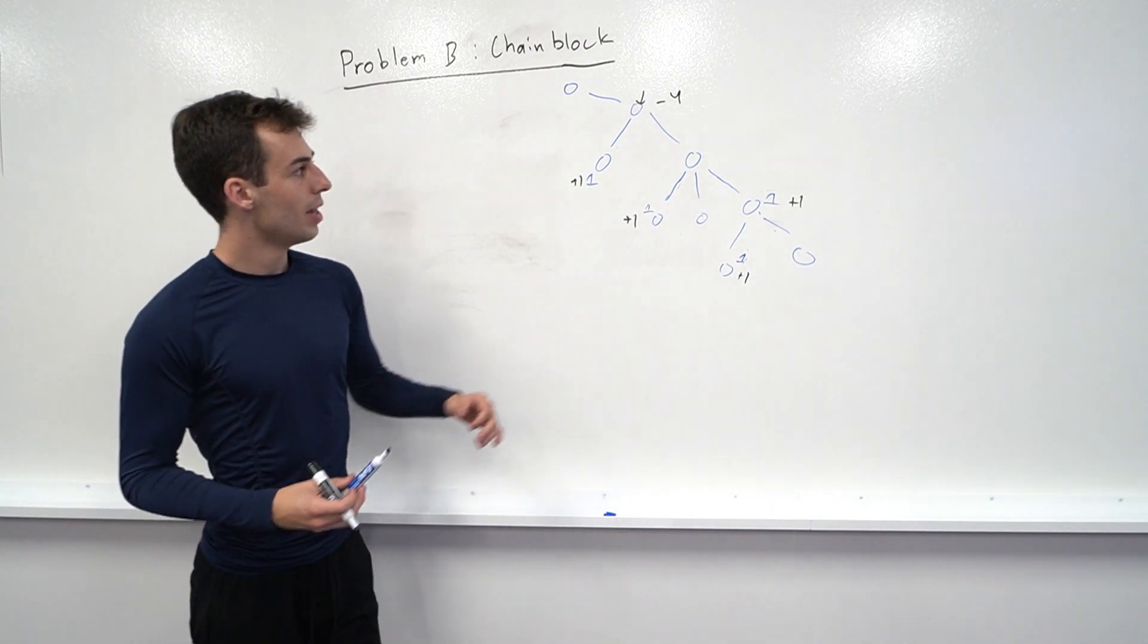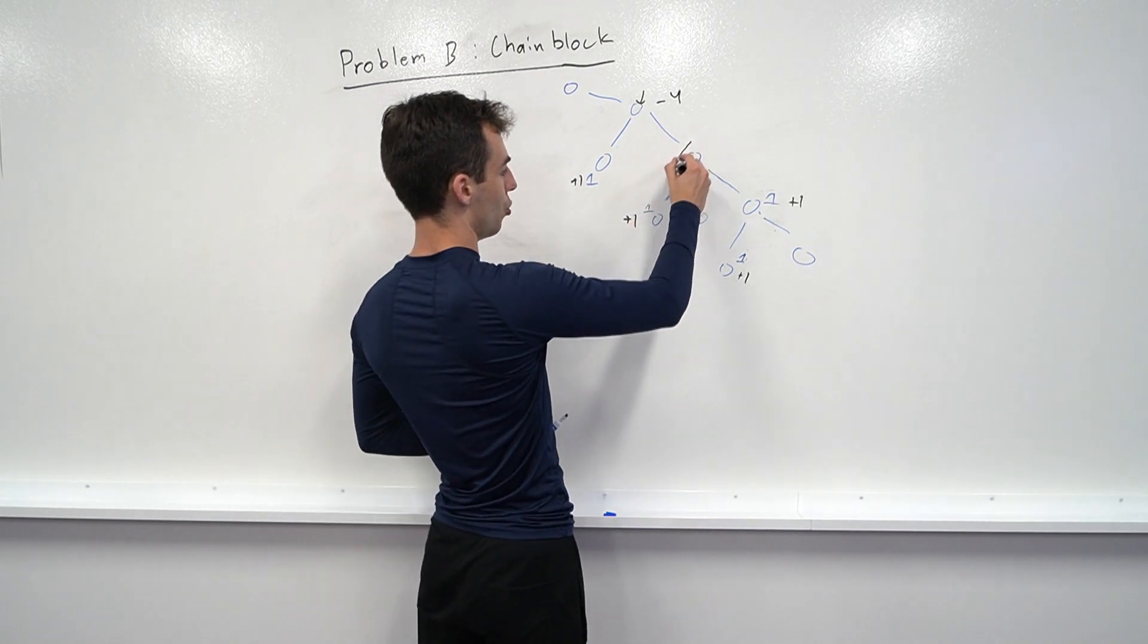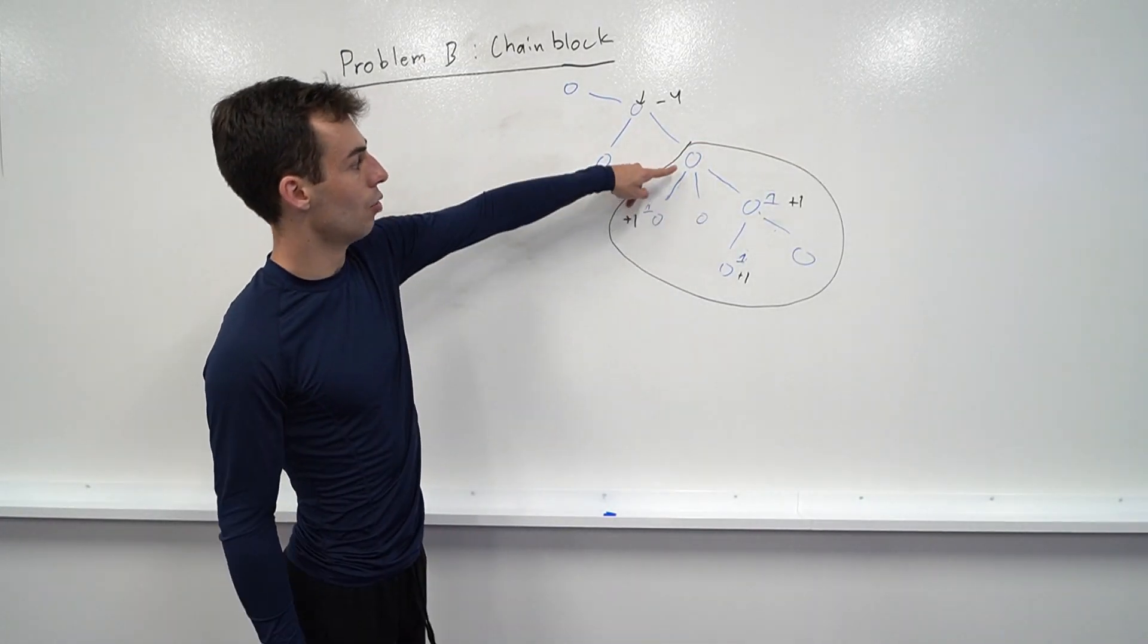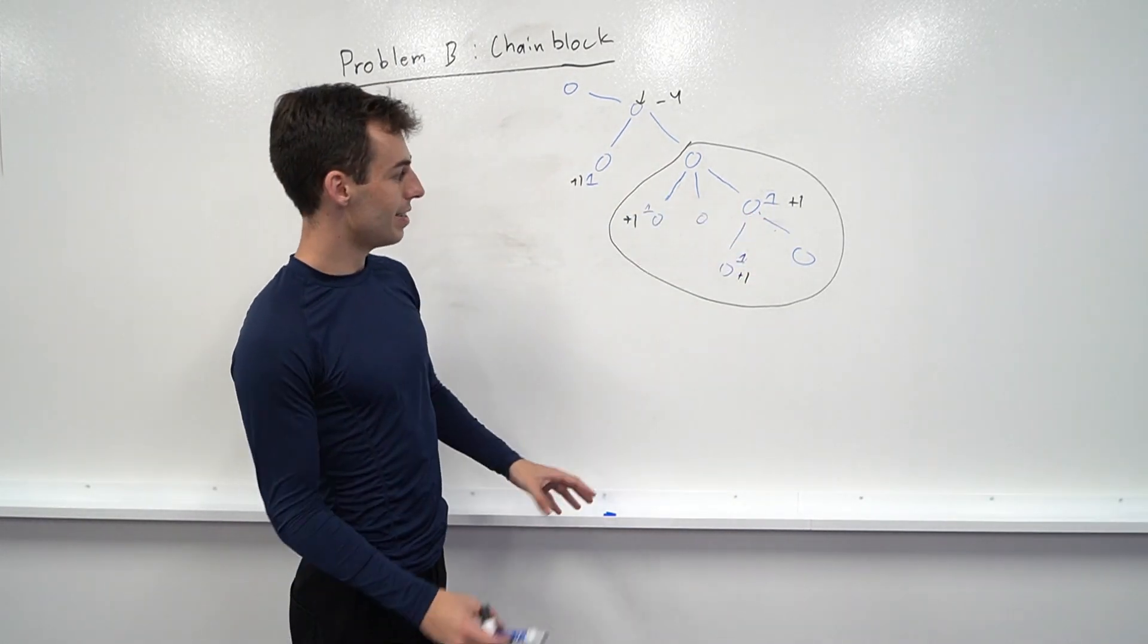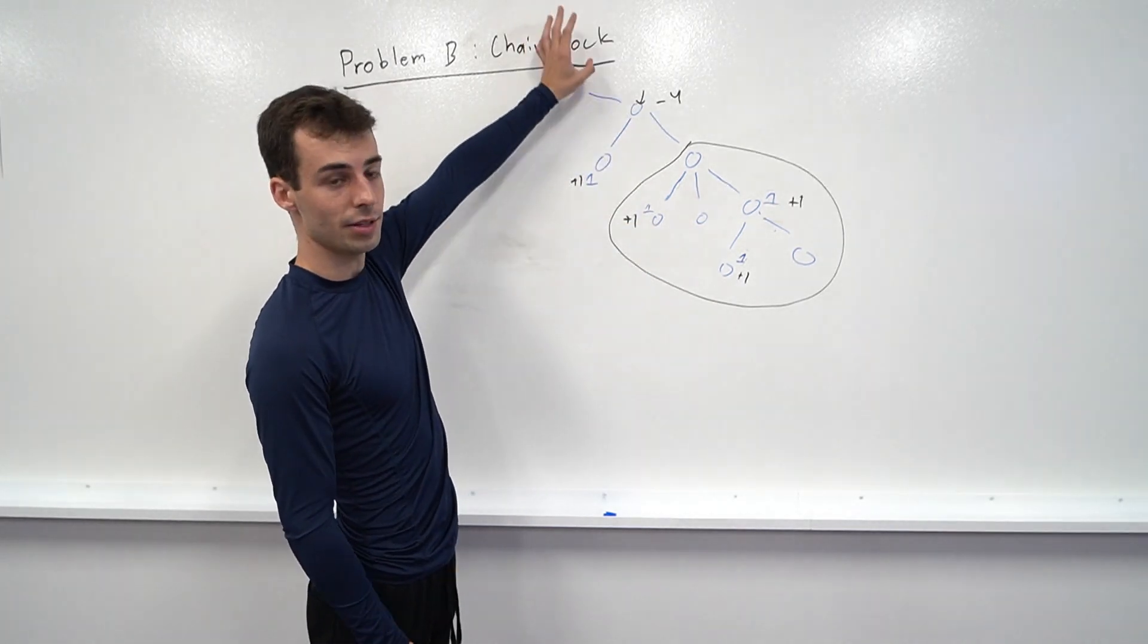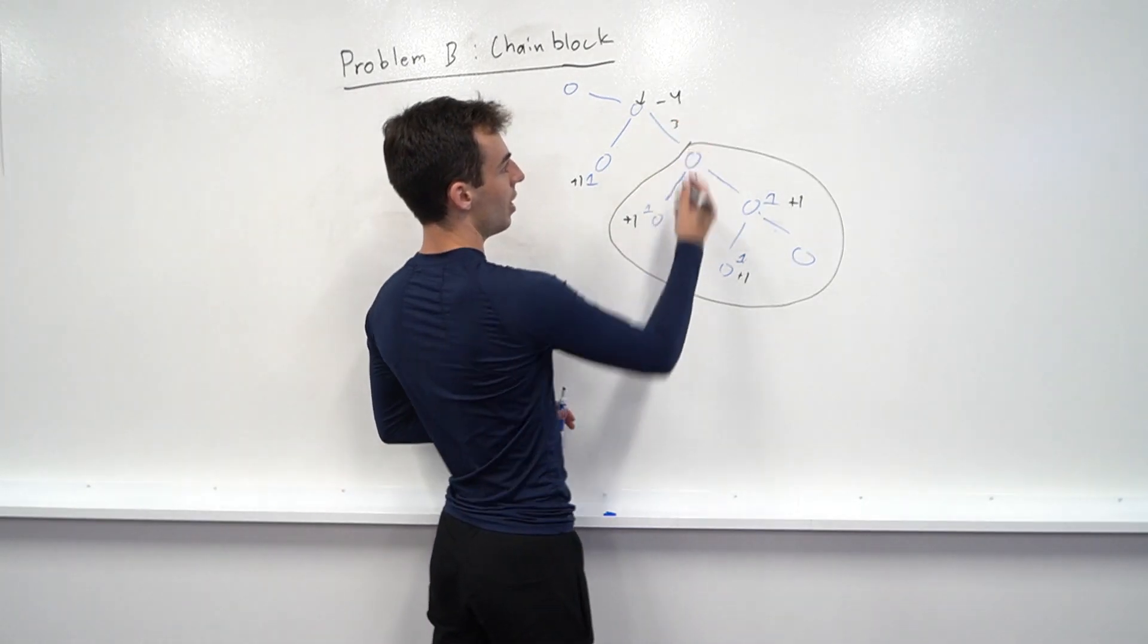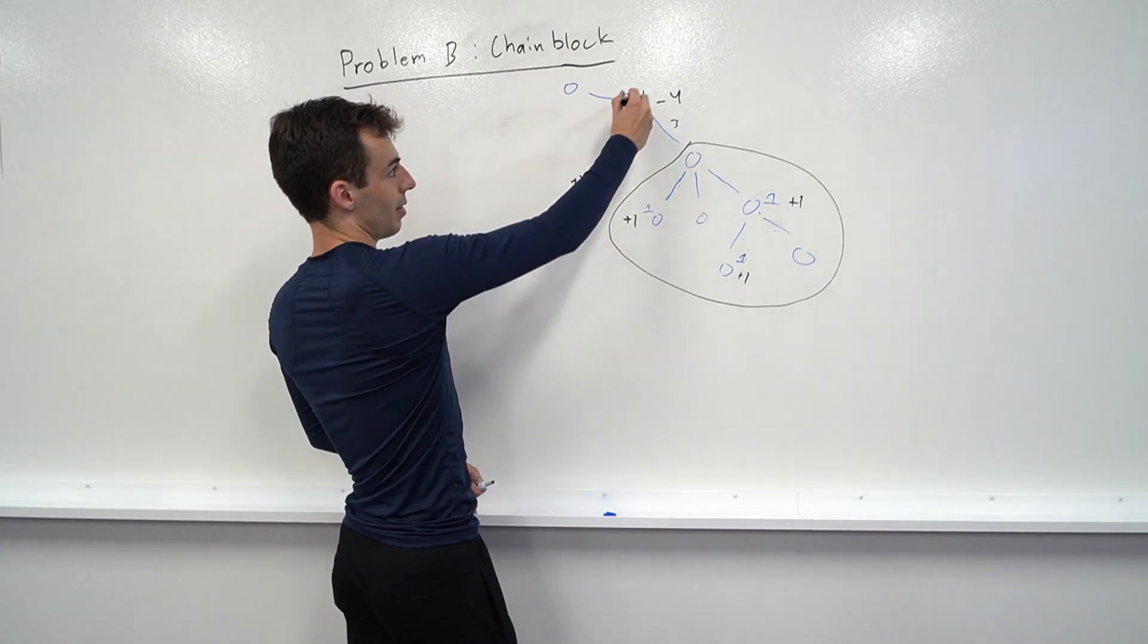Now what this tells us is if we look at some subtree, maybe we'll consider this subtree here. If we get the sum over this subtree, we'll get a sum of three. And what that means is there are three edges that start in this subtree, but don't end until above this subtree. Since this sum along this edge is positive, it's three, that means this is protected three times.